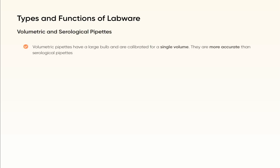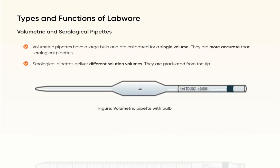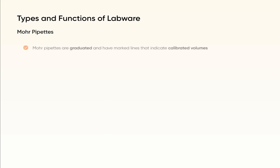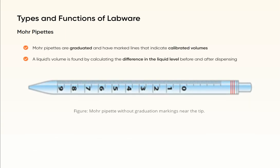Volumetric pipettes have a large bulb and are calibrated for a single volume; they are more accurate than serological pipettes. Serological pipettes deliver different solution volumes and are graduated from the tip. More pipettes are graduated with marked lines indicating calibrated volumes; a liquid's volume is found by calculating the difference in liquid level before and after dispensing.